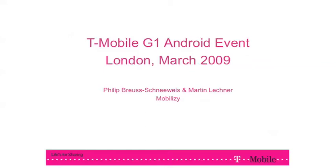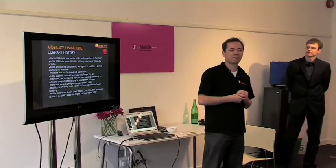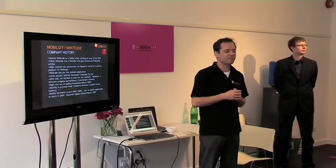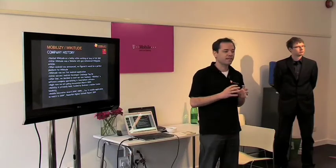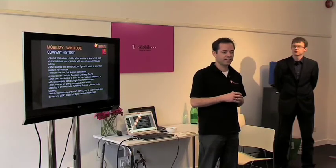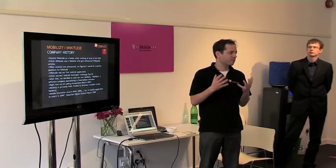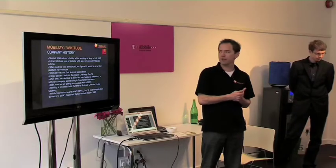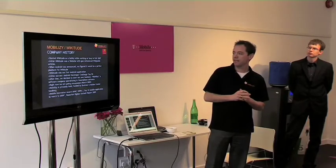Wikitude started as a hobby project — actually our first mobile project. It began as a simple web page with geo-referenced Wikipedia data, and then when Android was announced, we thought it would be a great application for Android. It fits really well with GPS and Google Maps, so we decided to build a Wikitude client for the Android platform.